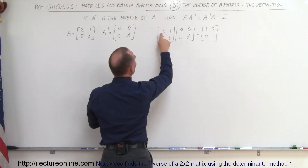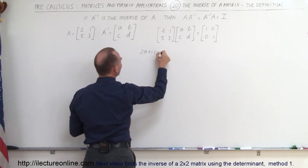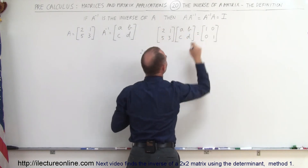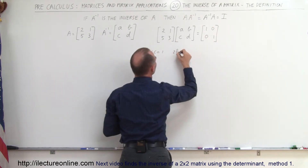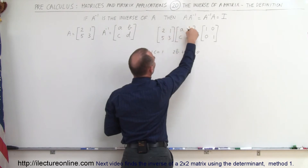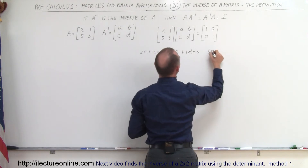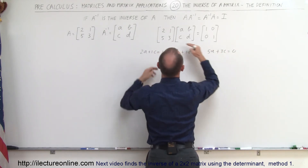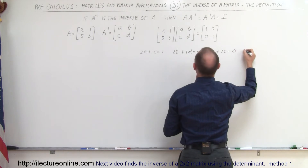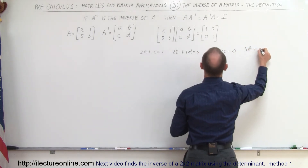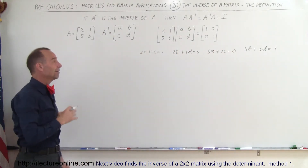First I can say that 2 times A plus 1 times C must equal 1 — so 2A plus C equals 1. I multiply this row times this column and get that element. Now multiplying this row times the next column, 2B plus 1D should equal 0 — so 2B plus D equals 0. Now multiplying the next row times this column, 5A plus 3C is equal to 0. And finally this row times this column gives 5B plus 3D is equal to 1. So now we have four equations and four unknowns which we should be able to solve for A, B, C, and D.